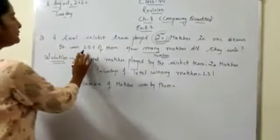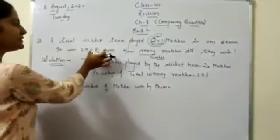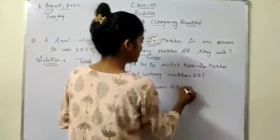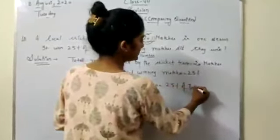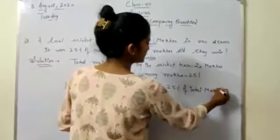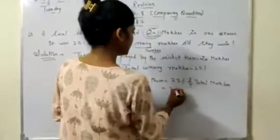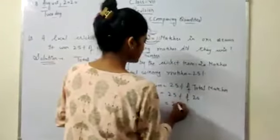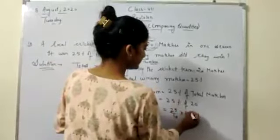So, they said it won 25% of them. Them means total. It means 25% of total matches. So, 25% of total matches are 20. So, it's 25 by 100 into 20.